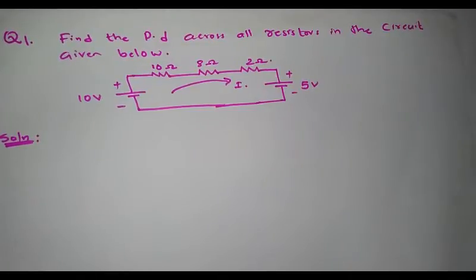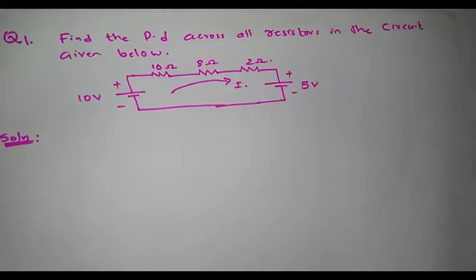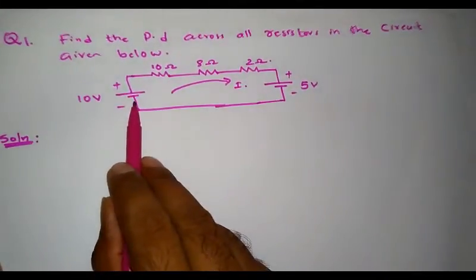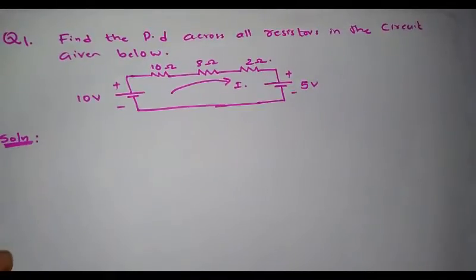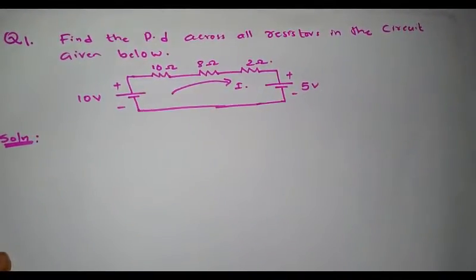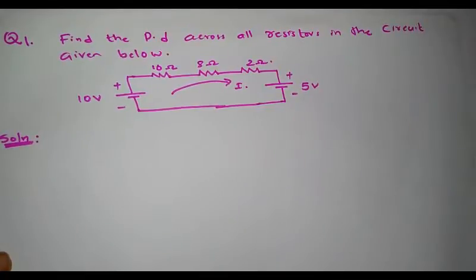By considering the voltage loop, we first consider the closed loop and write the mesh equation corresponding to it. I am starting from the voltage source at the leftmost point, that is the 10 volt source, and I will move in a clockwise direction. The first element I encounter is the 10 volt voltage source, and I move from the negative terminal to the positive terminal of it.